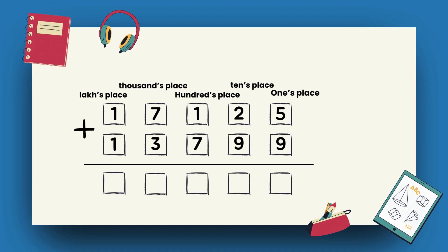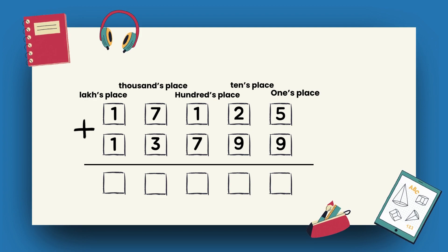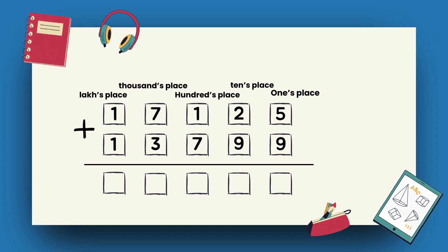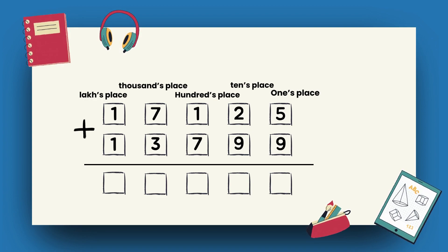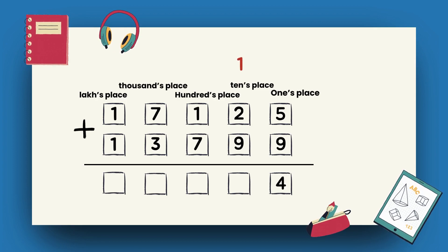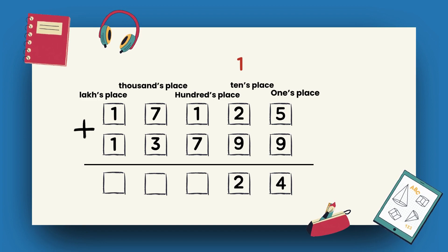Let's start by adding digits at 1's place. 5 plus 9 becomes 14. 4 comes at 1's place and 1 goes to carry. Then moving to 10's place, 2 plus 9 plus 1 becomes 12. 2 comes at 10's place and 1 goes to carry.